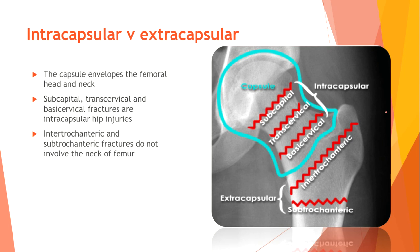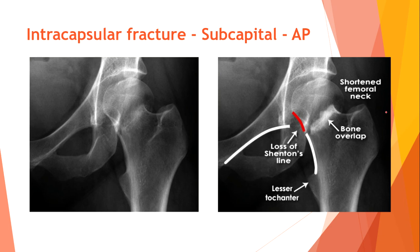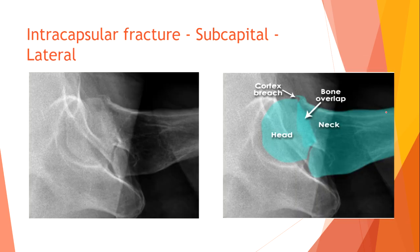The capsule envelops the femoral head and neck. There are two major types of hip fractures: intracapsular and extracapsular. Subcapital, transcervical, and basicervical fractures are intracapsular hip injuries. Intertrochanteric and subtrochanteric fractures do not involve the neck of the femur. The intracapsular subcapital fracture on the anterior-posterior view shows two major signs: loss of Shenton's line and bone overlapping.